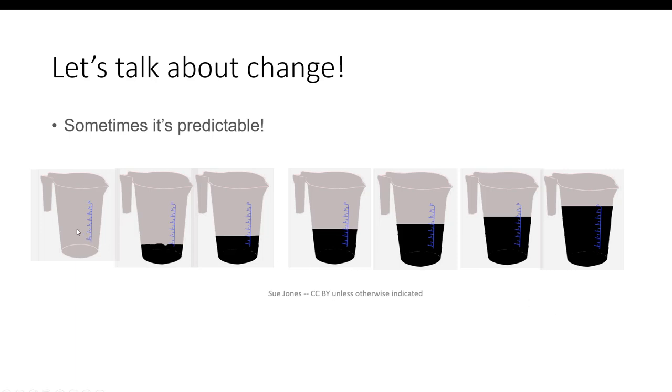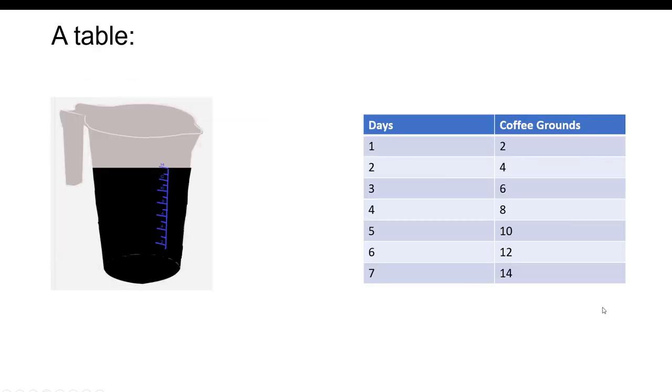If I save my coffee grounds for the compost pile and I add 2 ounces every day, this will happen. If we made a table of days and coffee grounds amounts, it would look like this: 2, 4, 6, 8, 10, 12, 14.